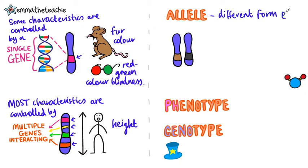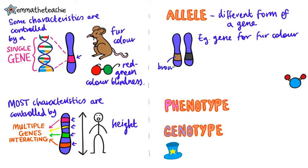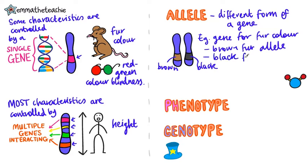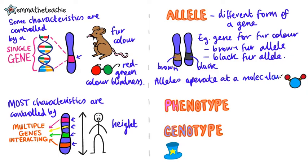Some genes have different forms. We call these alleles. For example, the gene for fur color in mice has both a brown fur allele and a black fur allele, as well as some others. Alleles operate at a molecular level to develop characteristics. We call these physical characteristics phenotypes.